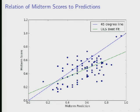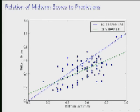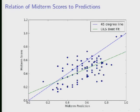We have names for people above and below the line. People above the blue line we might call pessimists — they received a higher midterm grade than they predicted. The people below the blue line, which is most of you, we might regard as optimists: they predicted a higher score than they actually received.